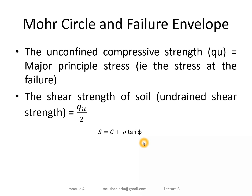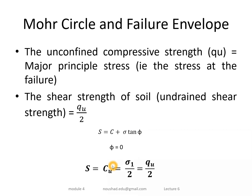In this case, phi equals zero, so S equals C. Therefore C equals sigma 1 divided by 2, which equals Q_u divided by 2. The shear strength of the soil equals the unconfined compressive strength divided by 2.